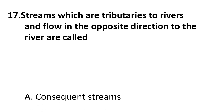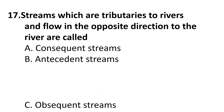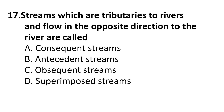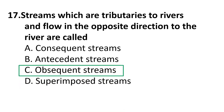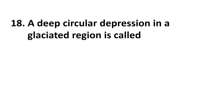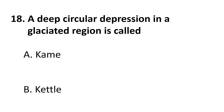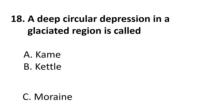Coming to the seventeenth question: streams which are tributaries to rivers and flow in the opposite direction to the river are called — A) consequent streams, B) antecedent streams, C) obsequent streams, D) superimposed streams. The correct answer is C: obsequent streams. Coming to the eighteenth question: a deep circular depression in a glaciated region is called — A) kame, B) kettle, C) moraine, D) esker.